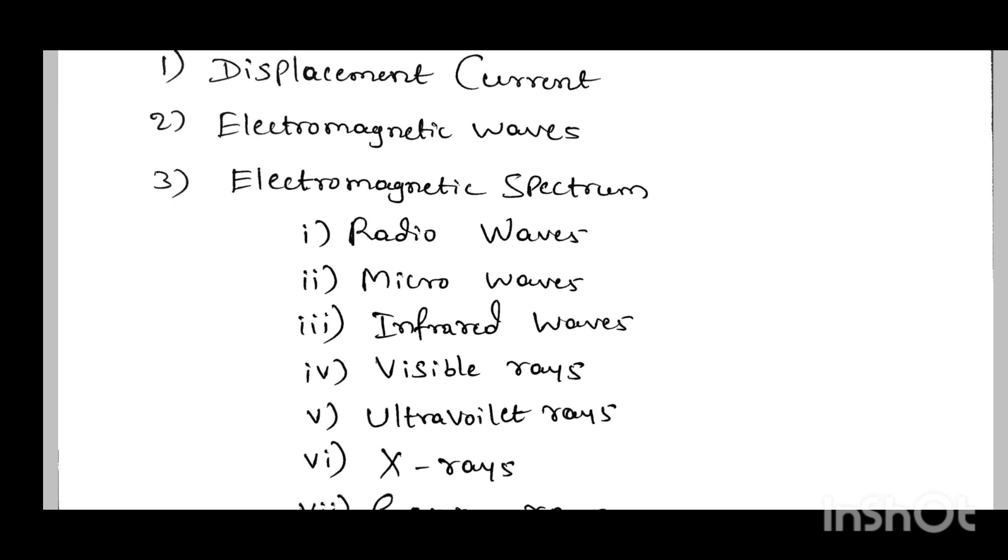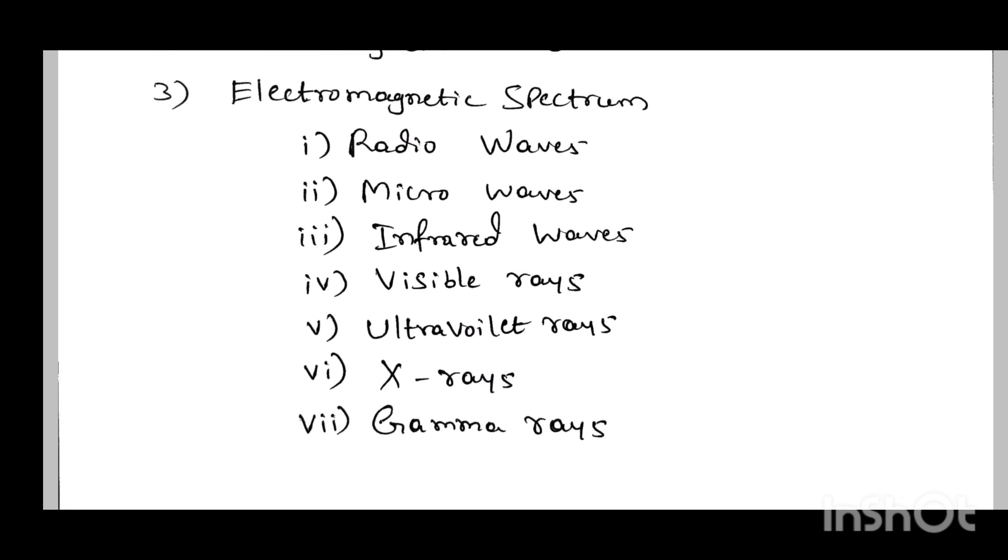In the electromagnetic spectrum, there are a number of radiations or waves: radio waves, microwaves, infrared waves, visible rays, ultraviolet rays, X-rays, and gamma rays. Totally seven radiations.